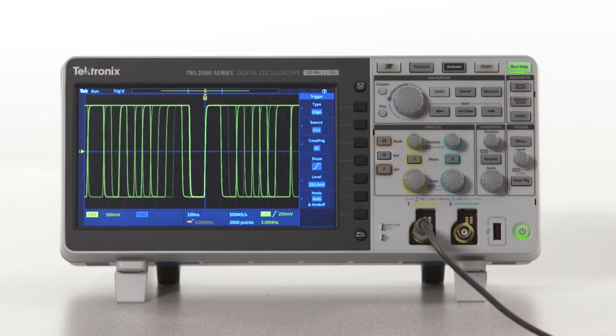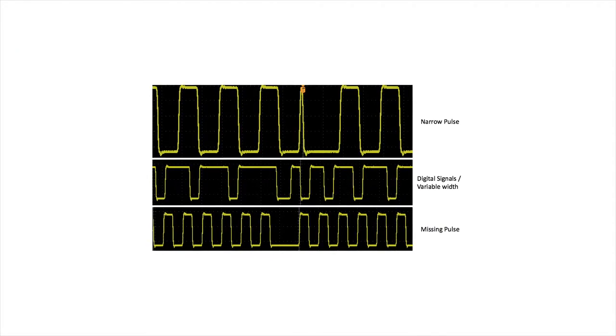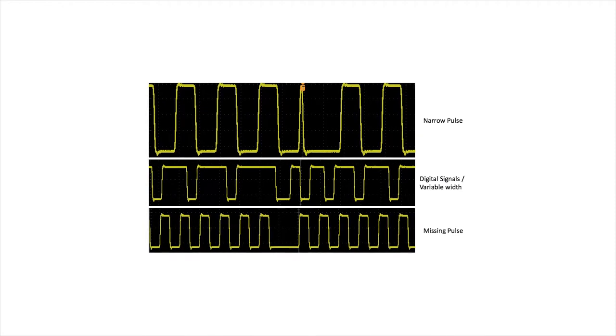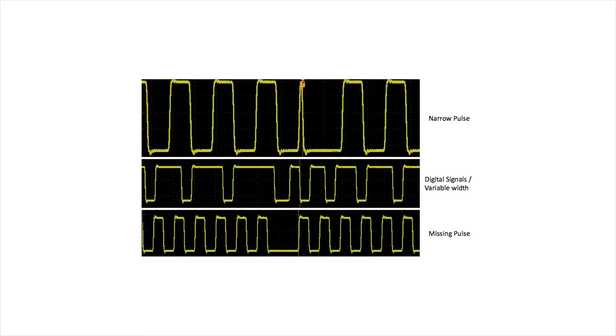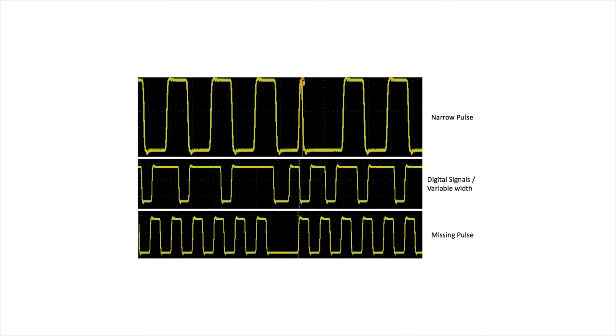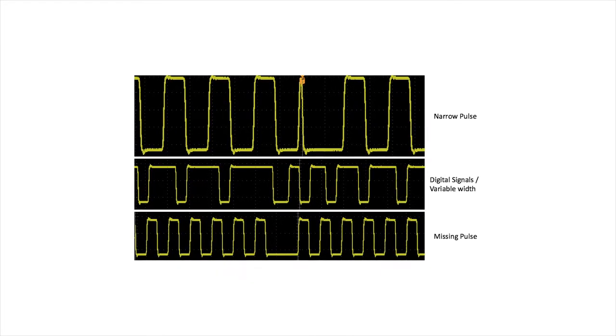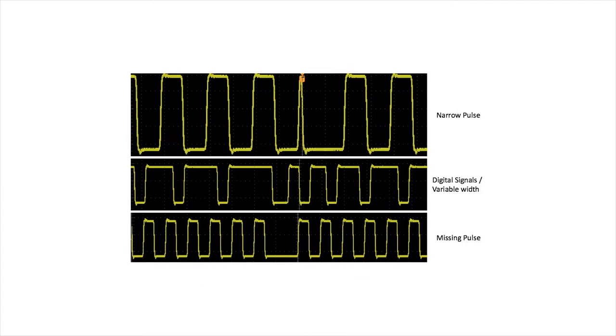There'll be times when edge triggering just doesn't cut it and it doesn't let you see what you're looking for. When you're dealing with signals of changing frequency or pulses of changing width, edge triggering isn't very effective. You can think of digital signals as streams of pulses with lots of different widths. When you're analyzing digital systems, you're looking for things like the start of a digital communications packet, missing pulses, or pulses that are the wrong shape.